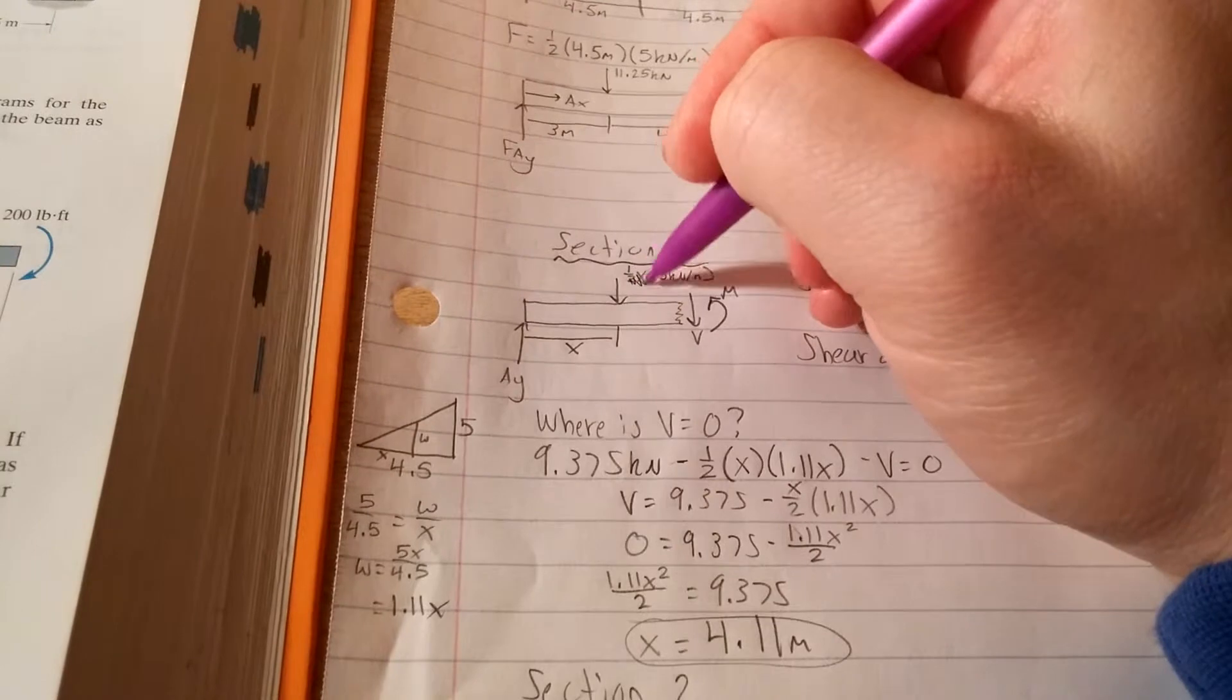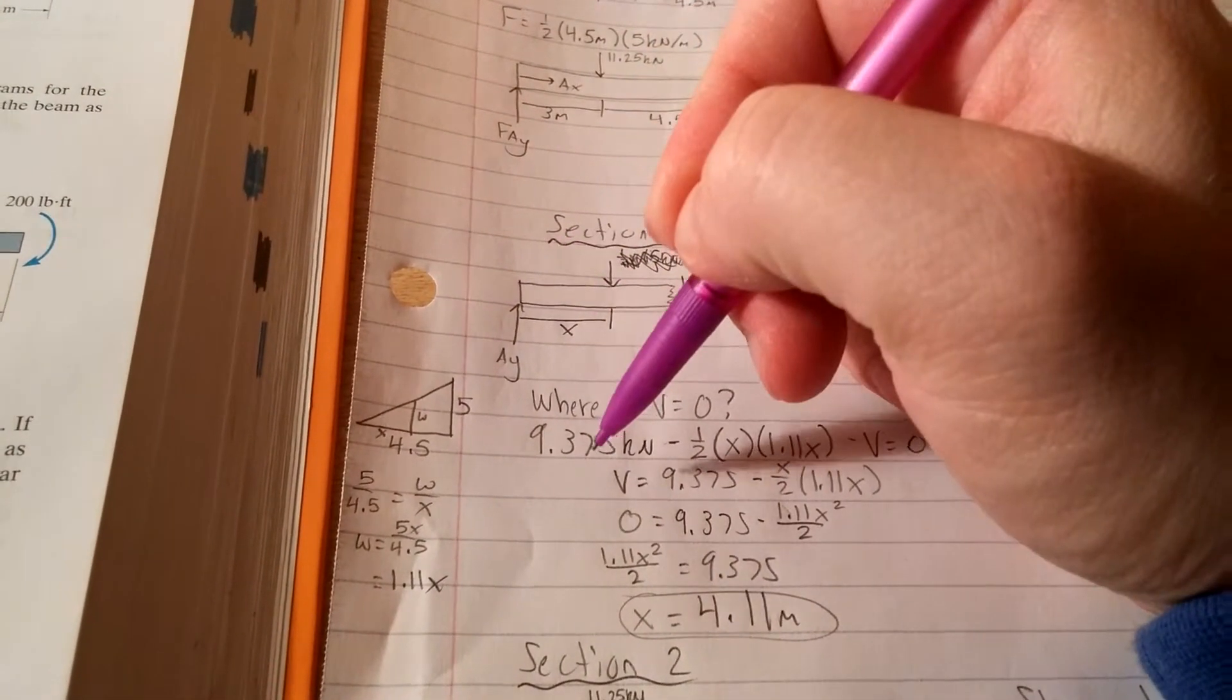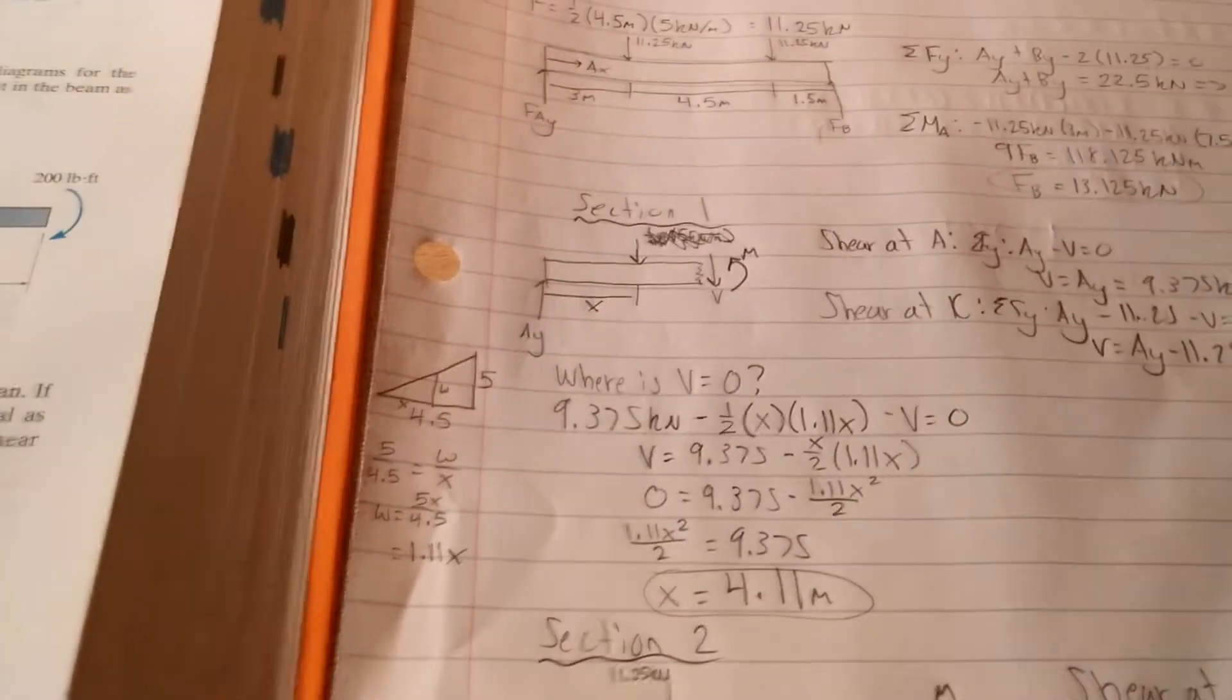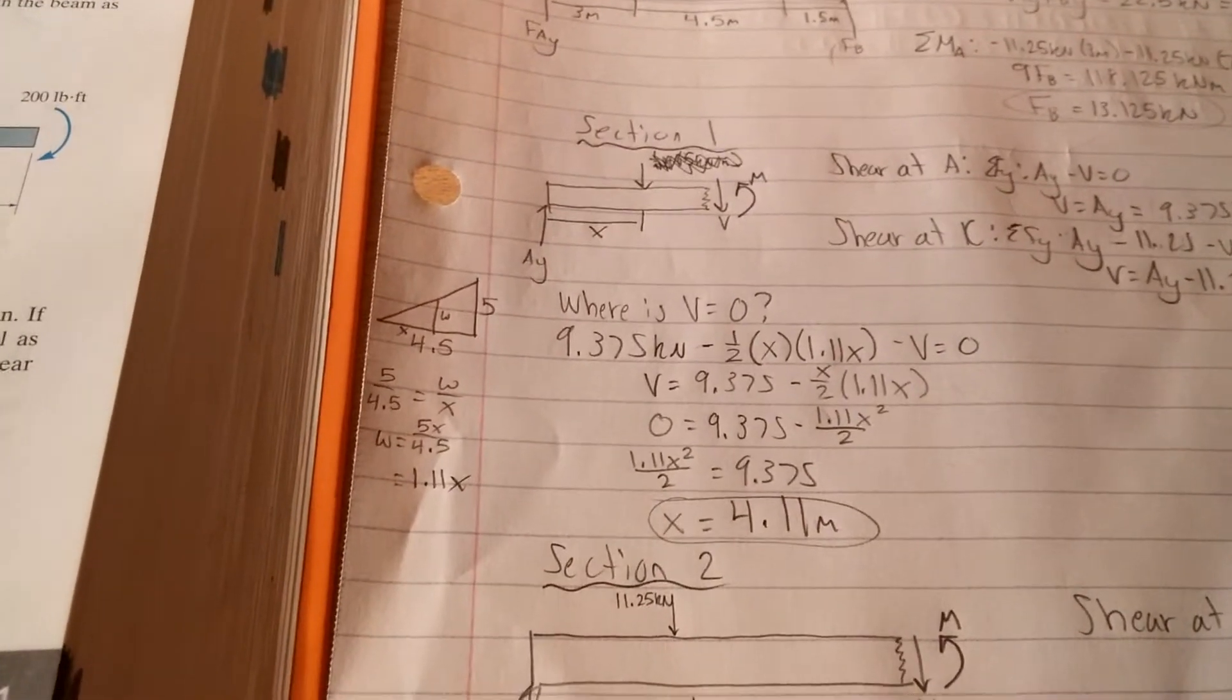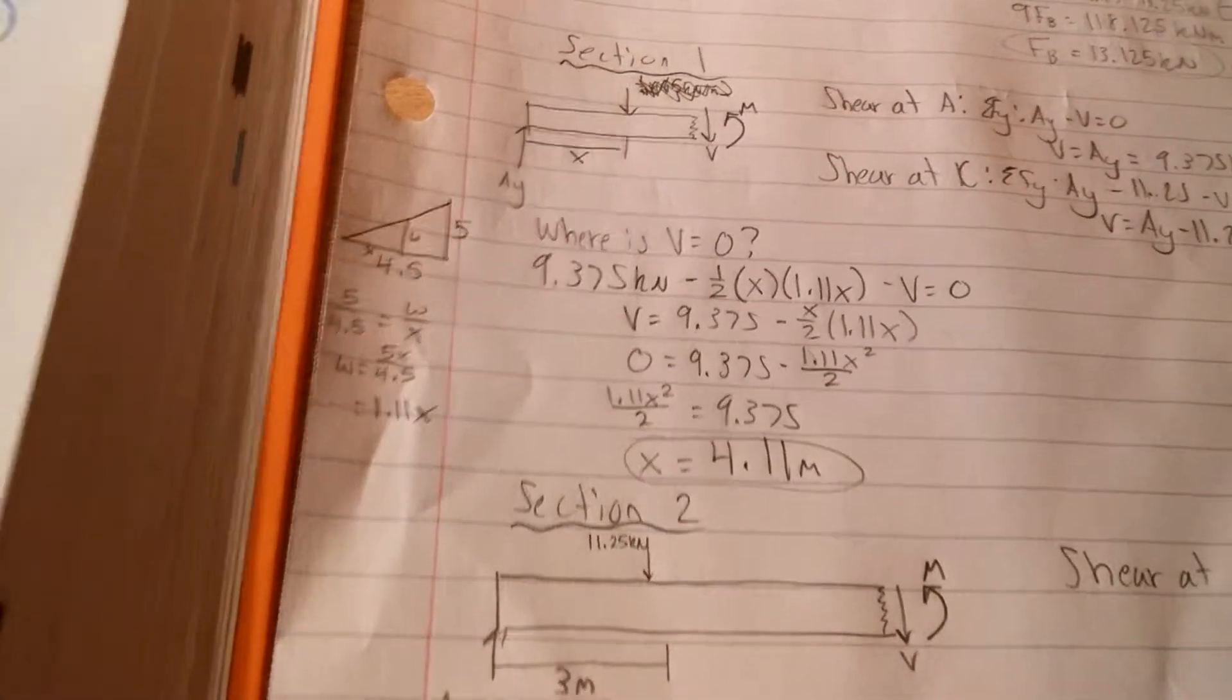Let me scratch this out. We know that we have AY, which is our 9.375, but we need to find a way to express whatever portion of that triangle we have. So I use the similar triangle method.